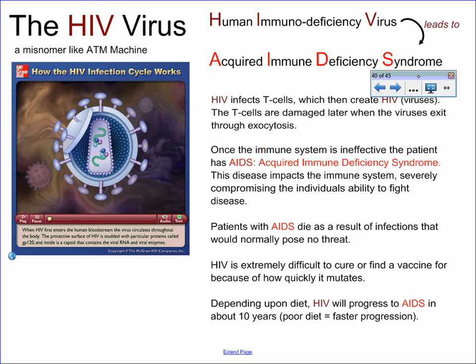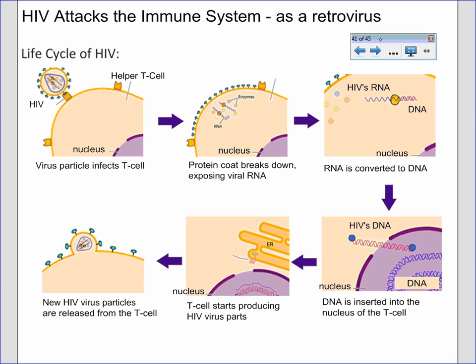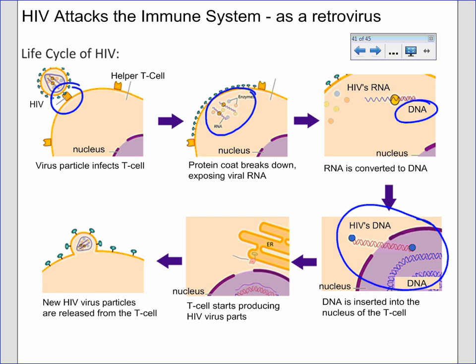T cells are very much the center of the immune response, and HIV infects them in a particularly mean way. HIV viruses adhere to cell surface proteins, and once inside they release their RNA and some enzymes. Those enzymes go through reverse transcription, turning that RNA into DNA, which they then insert into your genome. Your genome now has the HIV virus inside of it, and by simply reading your own DNA, your cells will produce viral proteins that are then assembled into a full-blown HIV virus through exocytosis.